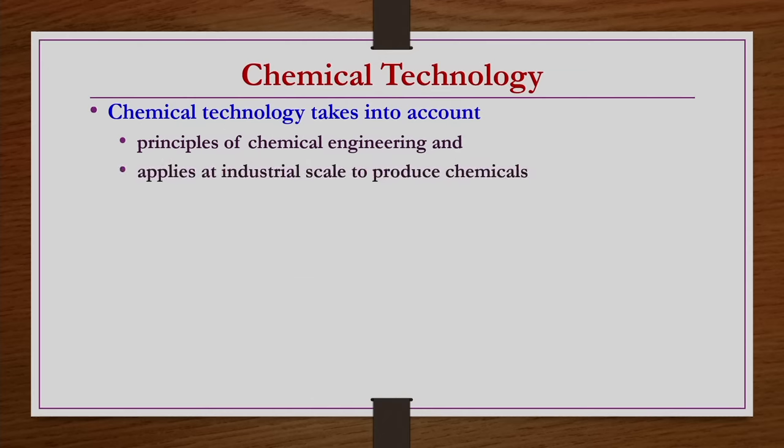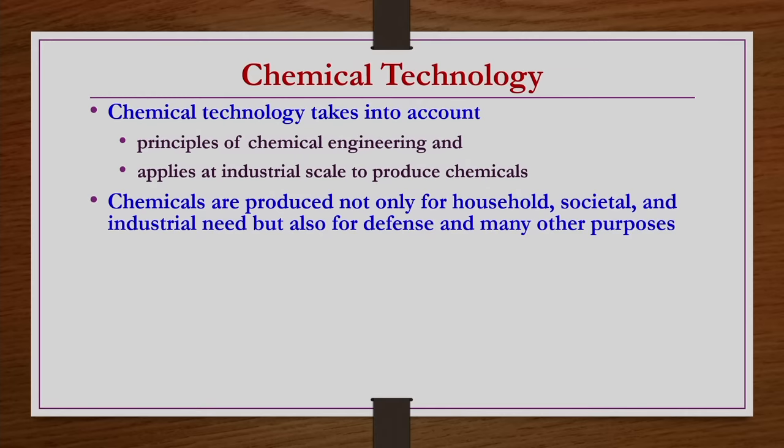These chemicals are in general often used for household purpose, societal purpose, and industrial purpose. In addition, there are some chemicals which are also required for defense purpose and many other various purposes as well. However, considering the hazardous nature of many of the chemicals associated with almost all industries, it is very essential to follow the safety protocols strictly for chemical industries.